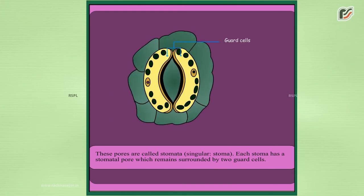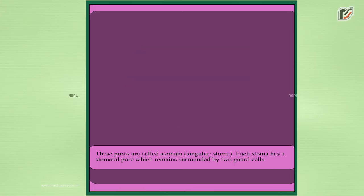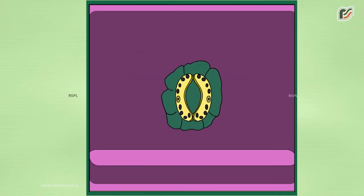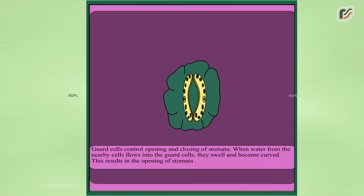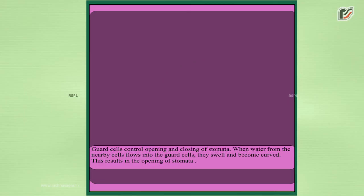Each stomata has a stomatal pore which remains surrounded by two guard cells. Guard cells control the opening and closing of stomata.